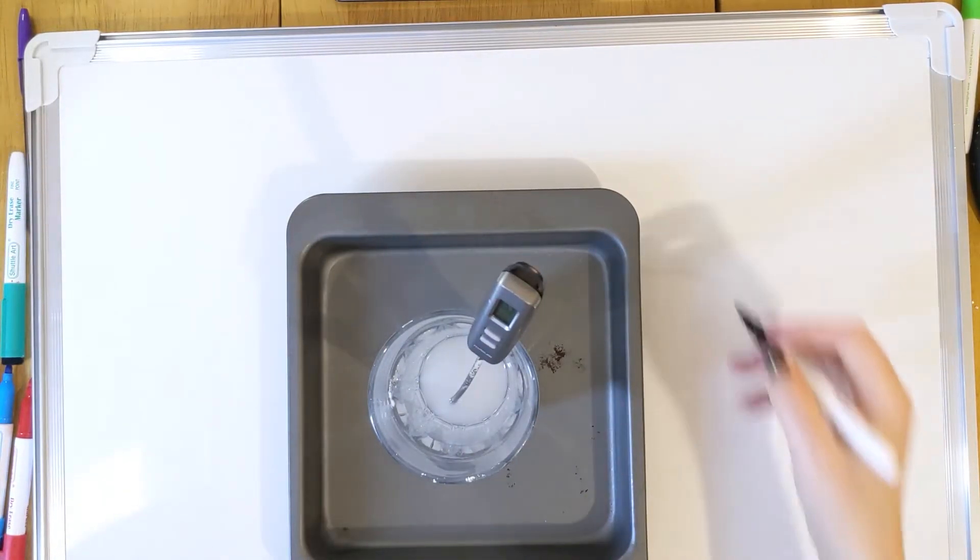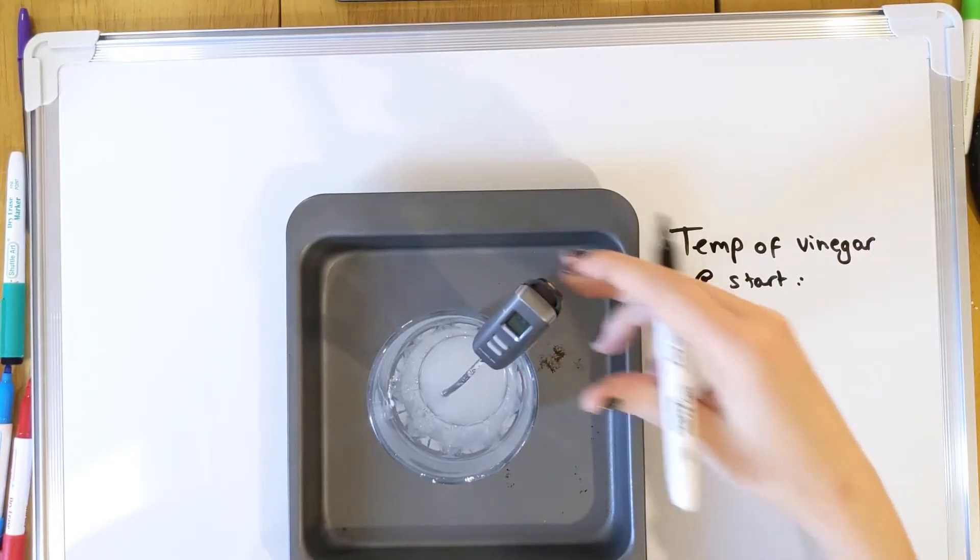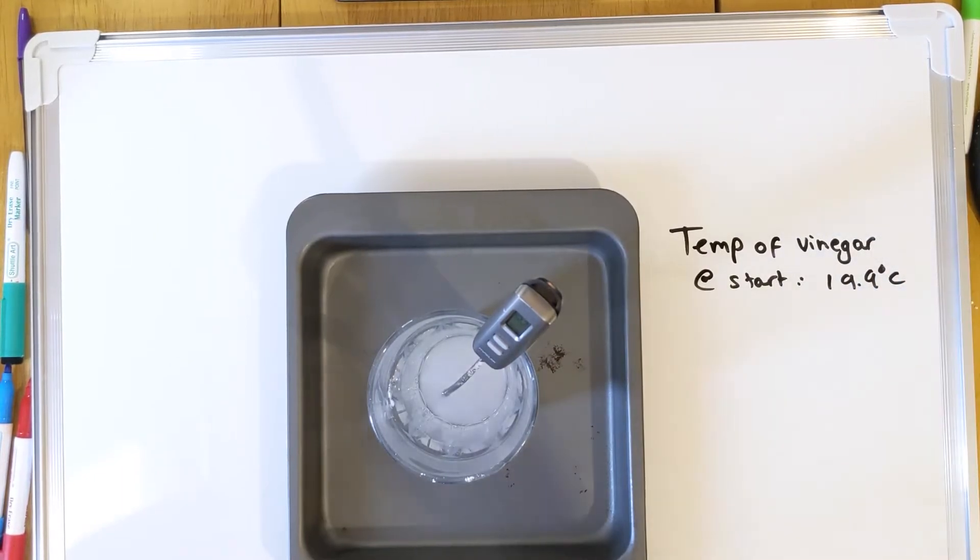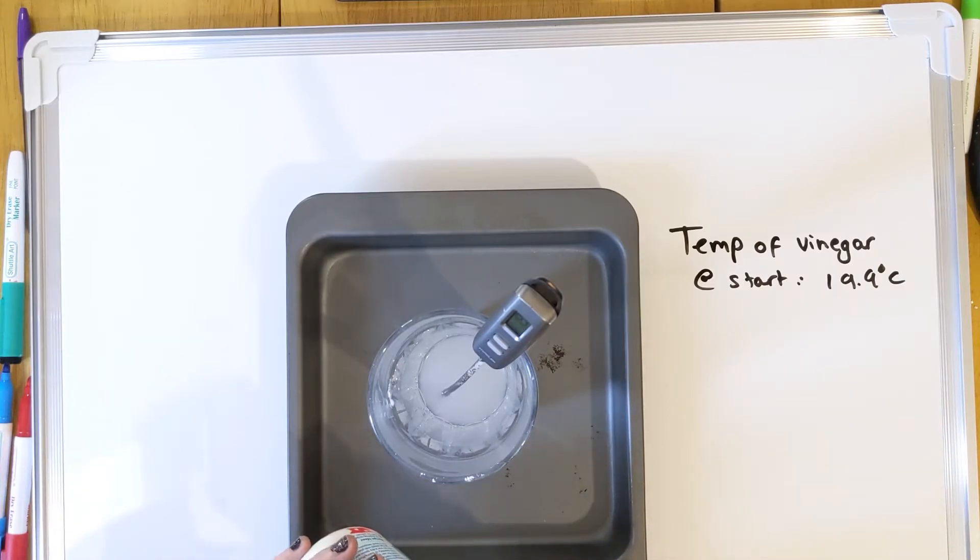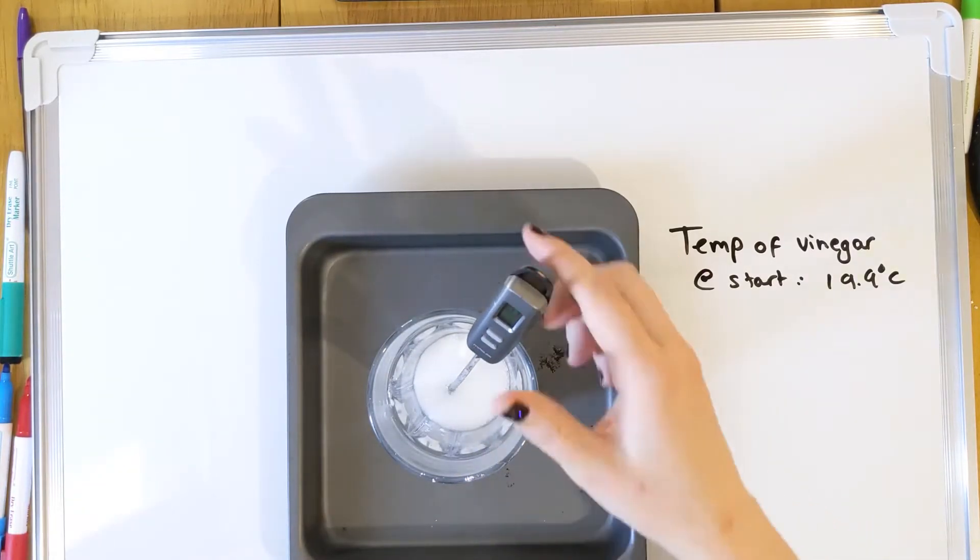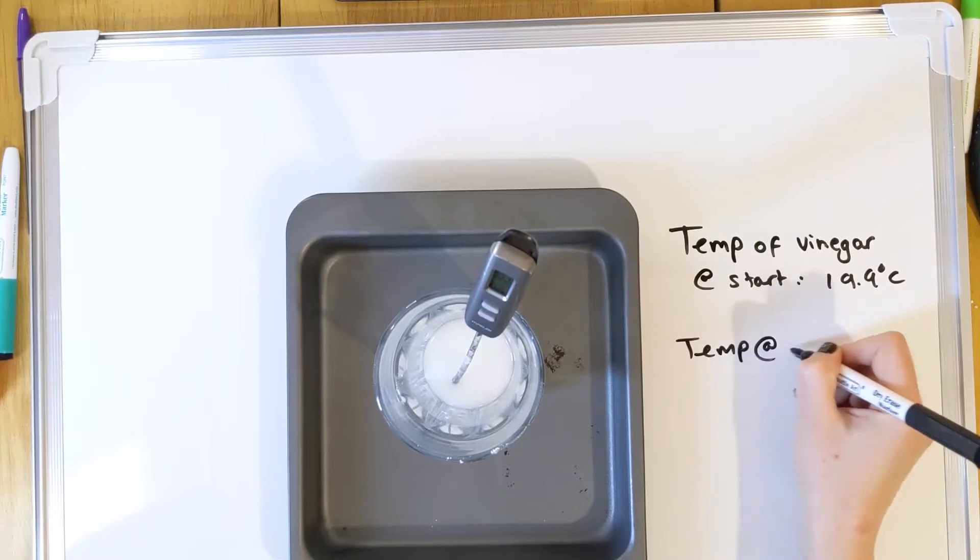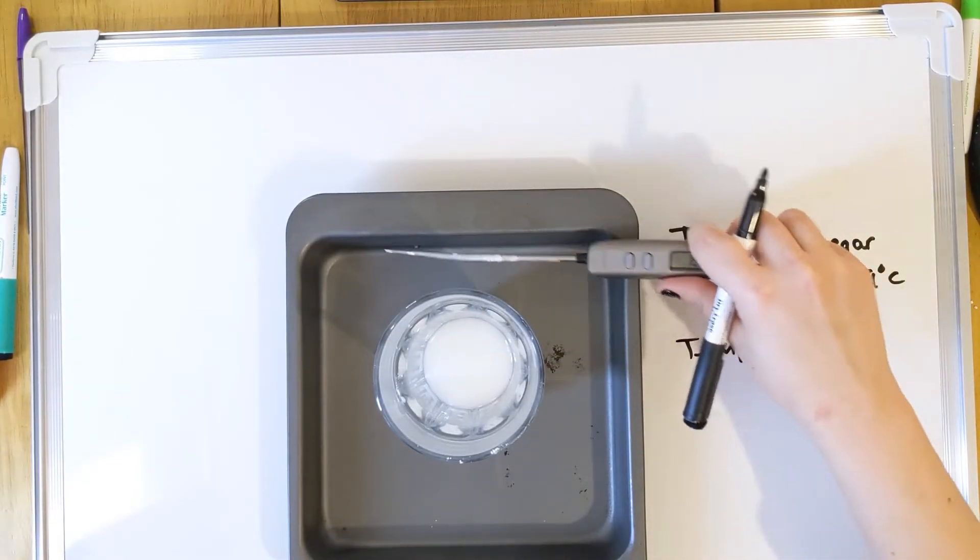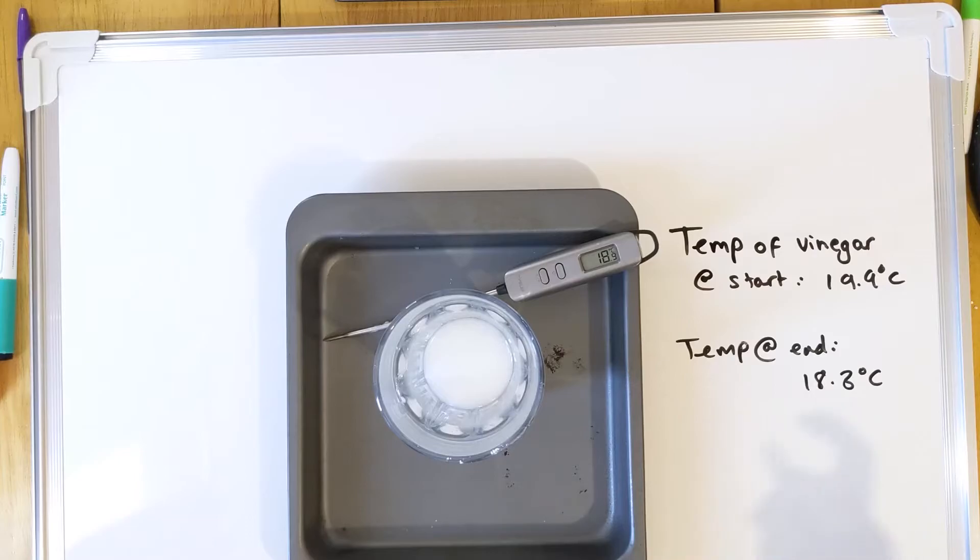So we've got our vinegar in there. What we're going to do is take the temperature. That's around 19.9 degrees. What we're going to do then, we're going to add some baking powder. This is a base, this is an acid, so that will neutralise and hopefully prove that neutralisation reactions are an example of an exothermic reaction. Okay, it's pretty much stopped fizzing now. So we've got our temperature at the end. Let's have a look. We've got it at 18.3 degrees. So it's not gone down much, but it has indeed gone down. So this proves that neutralisation is an exothermic reaction.